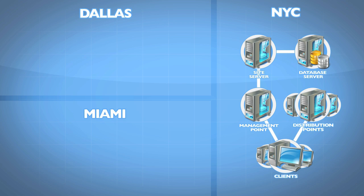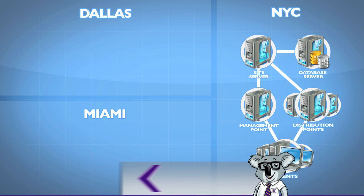Typically application packages and operating system deployment images are configured to be retrieved from local distribution points, and the downloading happens on the local area network. We transfer files from the site system server to each distribution point. That can be throttled, but on the local area network we're less concerned about throttling. Now, let's consider a scenario where I'm working in Dallas and the WAN bandwidth connection between New York and Dallas is not very good and not very reliable.